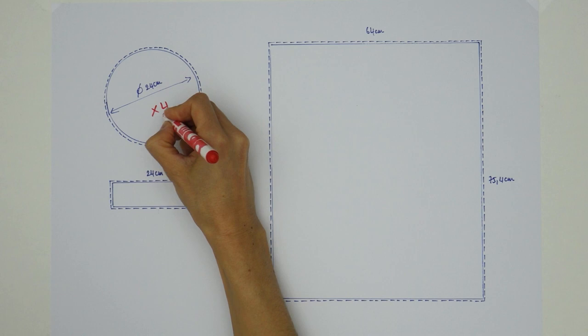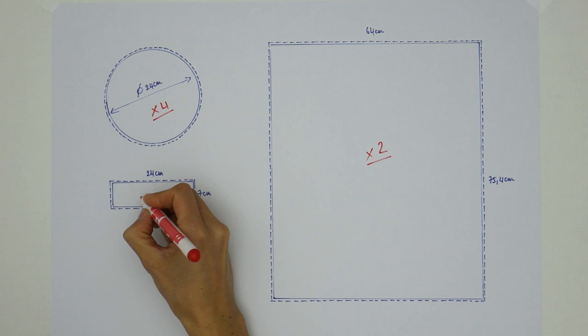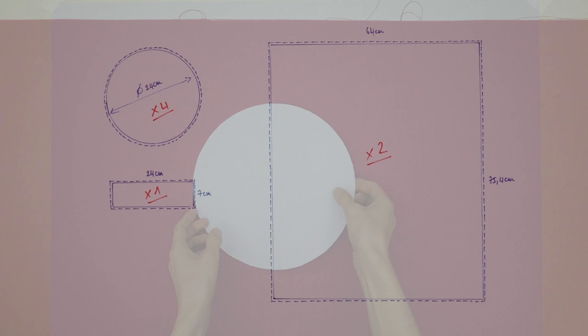Of course as usual let's not forget to add our seam allowance all around the pieces. 1 cm will be plenty enough for this project. We will need to cut the circle 4 times, the big rectangle 2 times and our small rectangle once only. You can now cut your pattern and lay it on the fabric using it as a guide to cut the fabric.